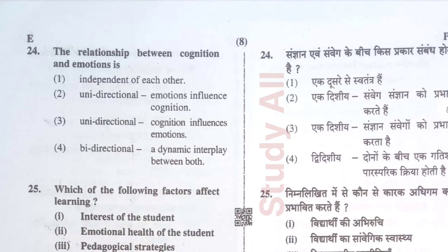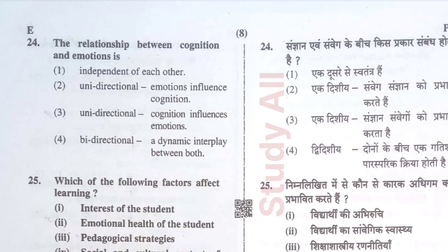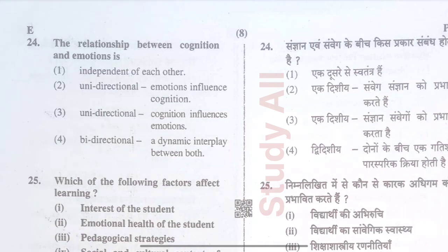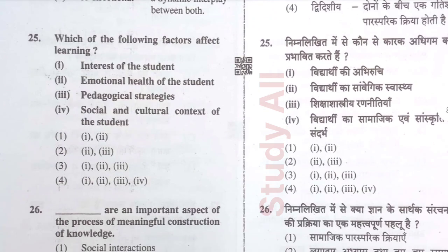Question number twenty-four: The relationship between cognition and emotion is — the correct option is option four: bi-directional, a dynamic interplay where both are interconnected.